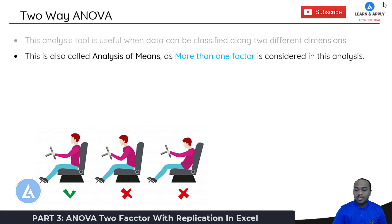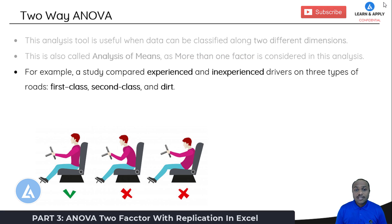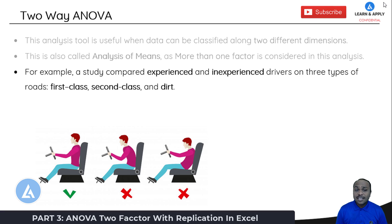For example, a study compared experienced and inexperienced drivers on three different types of roads — first class, second class, and dirt roads. In this example, we have two important factors: first is the experience of the drivers, and second is the road conditions.